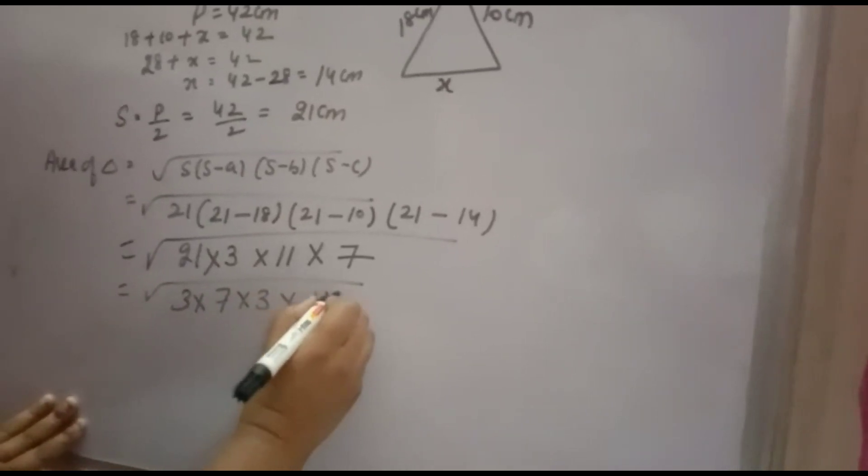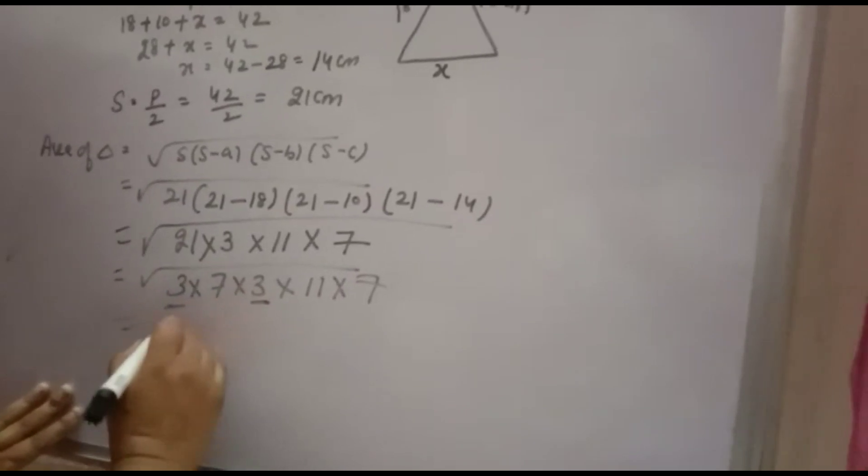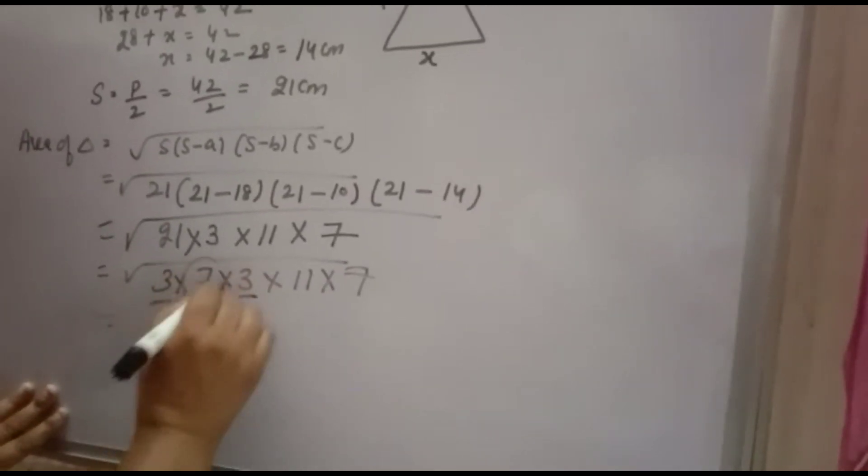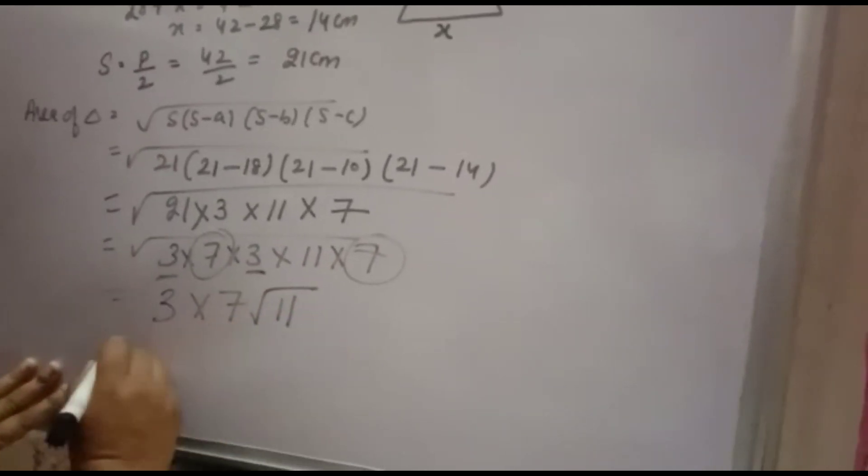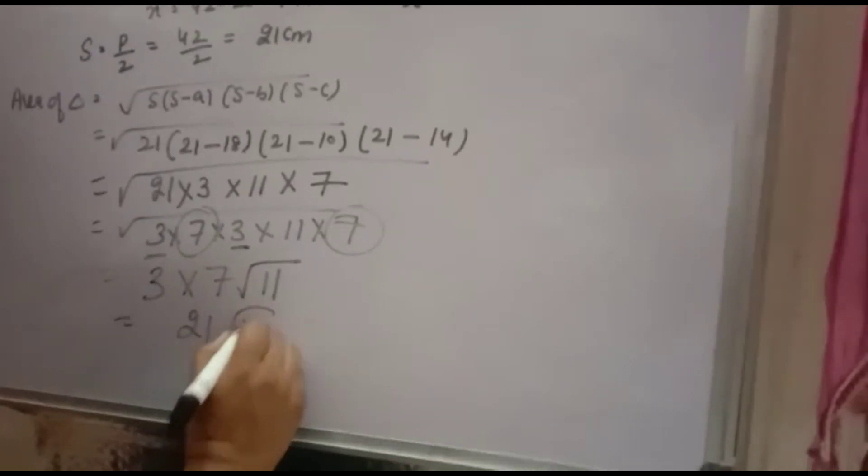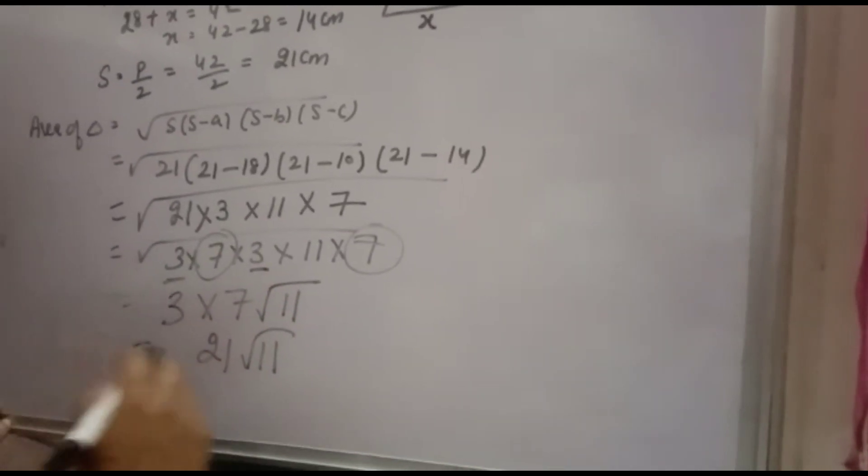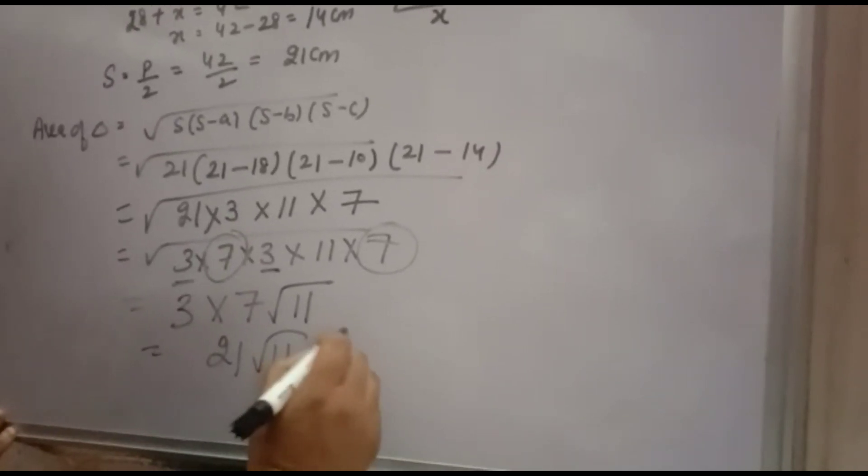Looking for pairs under the square root: √[3 × 7 × 3 × 11 × 7] = 3 × 7 × √11 = 21√11. This is the area of the triangle.